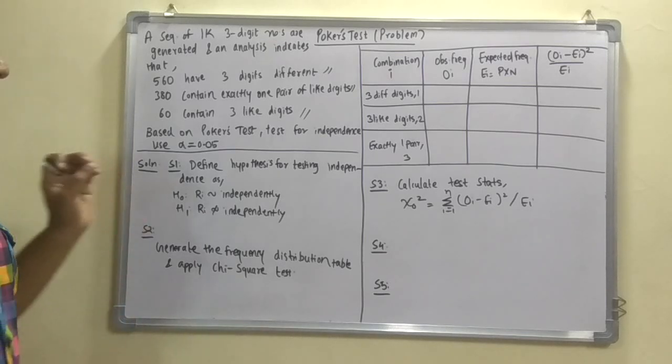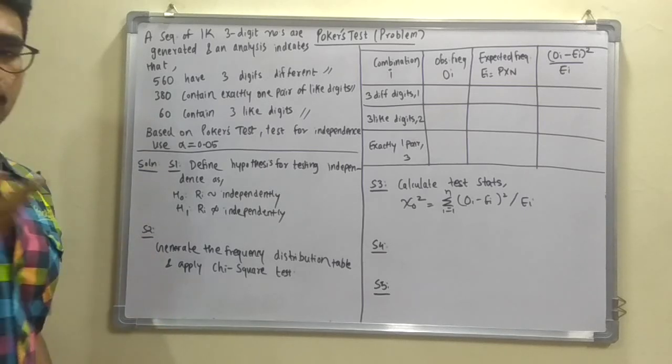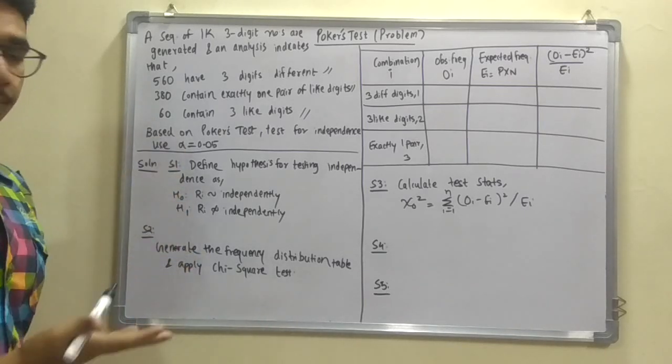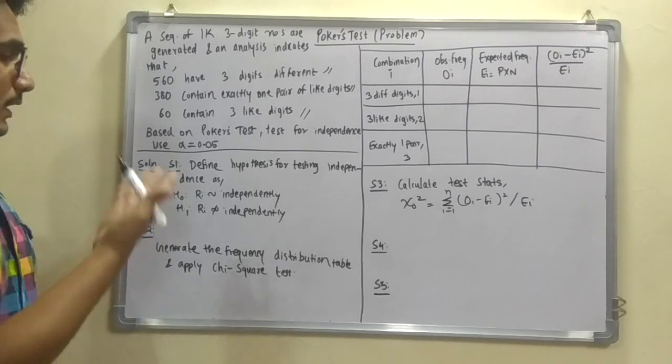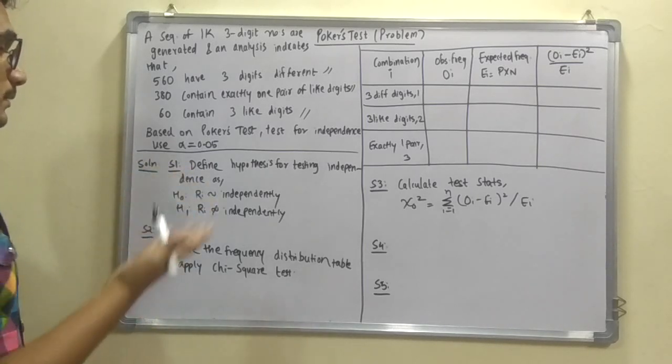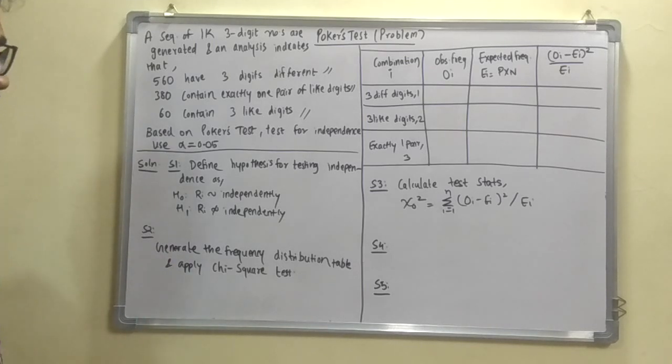Now the solution is much simpler. Only you have 5 steps. It will take hardly 3 minutes to solve this. So first of all this step 1 goes the similar way. That is you have to define the hypothesis for testing the independences. Because H0 is the hypothesis that Ri is independently distributed. And H1 is the hypothesis that Ri is not independently distributed.